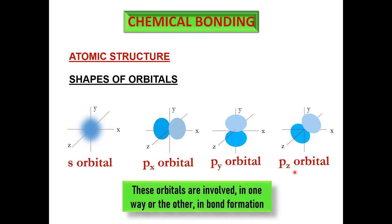These orbitals — S, P, D, and F — are involved in bond formation in one way or another. The chemical bonding we will now discuss can be of different types, and it is these orbitals which participate in forming those bonds. It was important to understand orbitals first, and now we will be discussing the chemical bond.